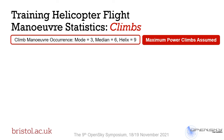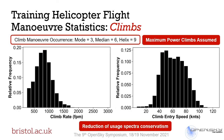Looking at climbing manoeuvres, the occurrence is in pretty good agreement between the in-service data and the Helix spectra. However, the Helix spectra assumes that every climbing manoeuvre is a maximum power climb, implying larger cyclic loads during climbs. When we develop statistics from every climb manoeuvre in the trajectory, the climb rate and entry speed show significant variability, inferring that maximum power climbs are not being performed at every occurrence and therefore cyclic loads from climbs may actually be lower in service. We may therefore be able to use such data to reduce the conservatism currently seen within our assumed design spectra.